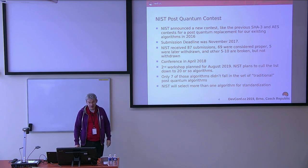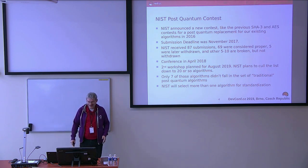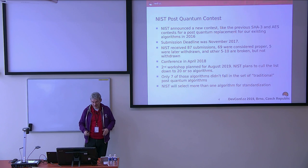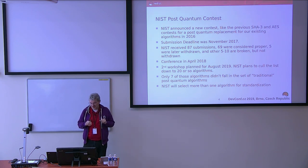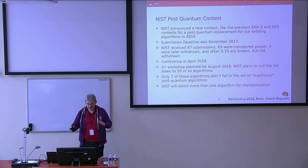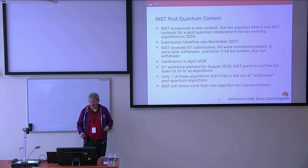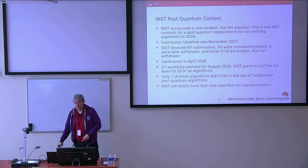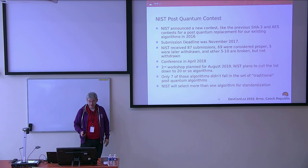There'll be a second workshop in August of this year, assuming the government shutdown didn't push that out. NIST plans to cull that list down to about 20 algorithms. We officially have 64 algorithms still in the contest. Seven of those 64 don't fall into our traditional post-quantum algorithm systems. NIST is going to select more than one algorithm for standardization — maybe three or four — and they're also saying when an algorithm drops out of their contest, it may come back in some future standardization.